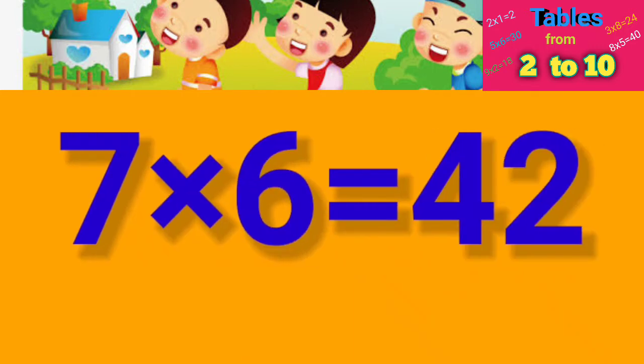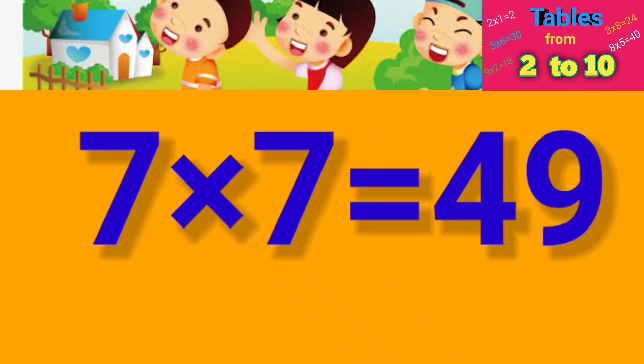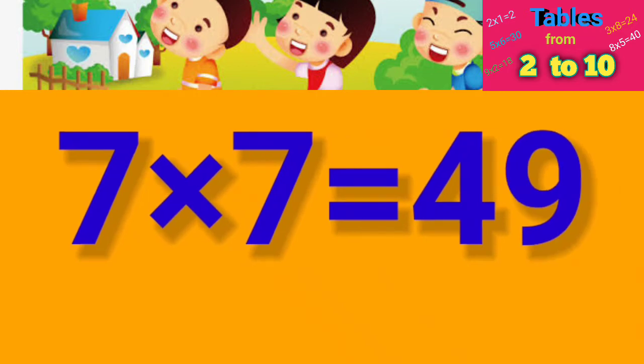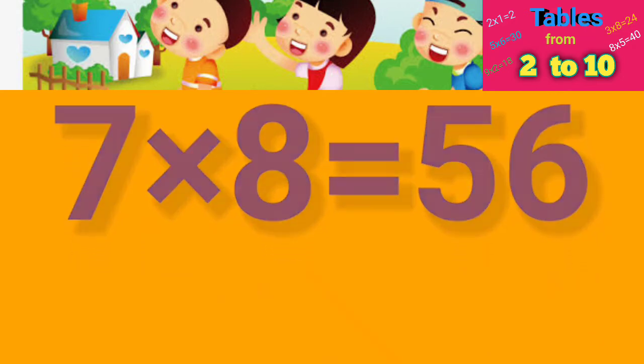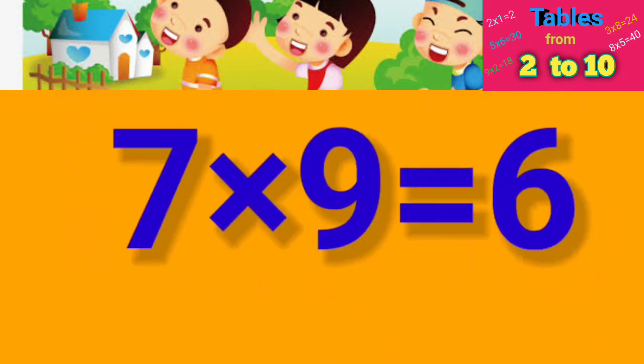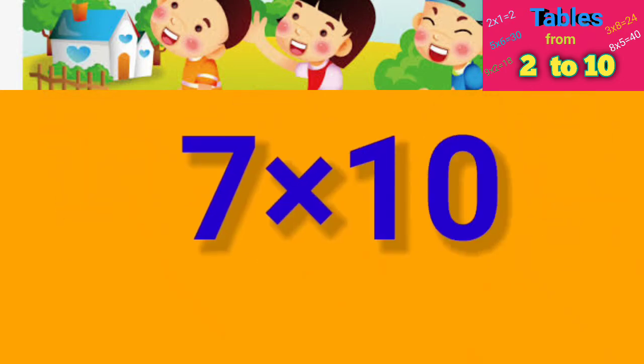Seven six's are forty-two, seven seven's are forty-nine, seven eight's are fifty-six, seven nine's are sixty-three, seven ten's are seventy.